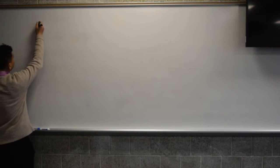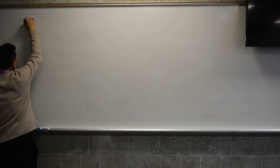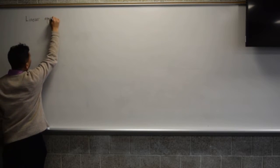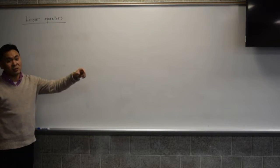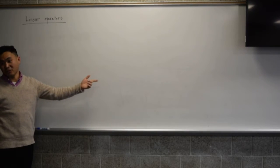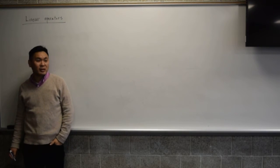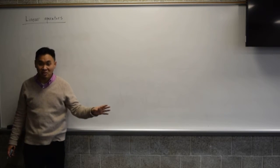Let me talk about what linear means. What does linear mean? First, an operator is a function which takes in a function — the input is a function and its output is a function. What's an example of such an operator? A derivative is an operator because it takes in a function, differentiates it, and gives you back another function.